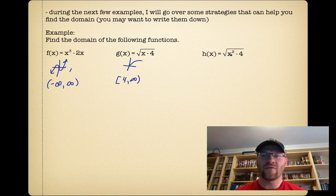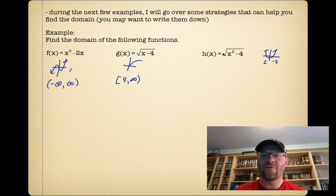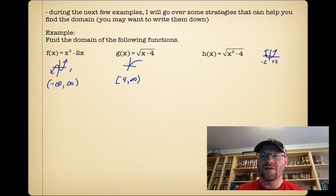For h of x equals the square root of x squared minus 4, you need to know what x squared minus 4 looks like — it's a parabola that goes through 2 and negative 2. Since we're taking the square root, we can't take the square root of a negative number — anything underneath the x-axis. So the domain is anything to the left of negative 2 or to the right of 2: negative infinity to negative 2, or 2 to positive infinity.